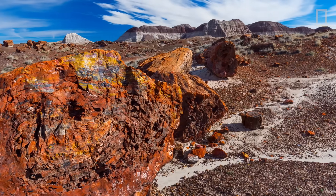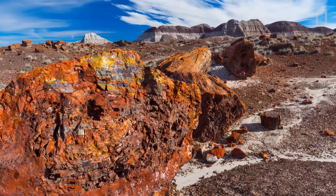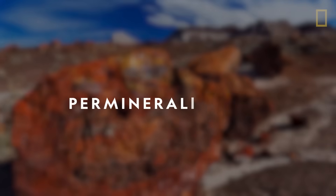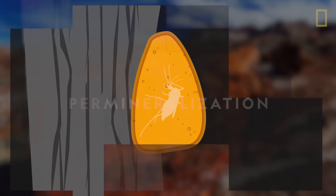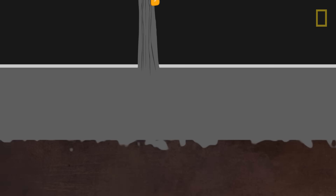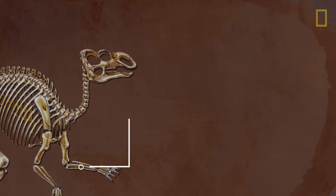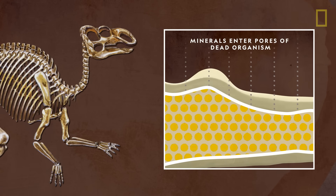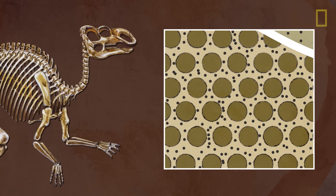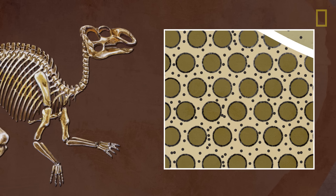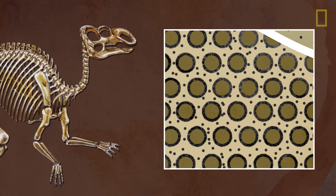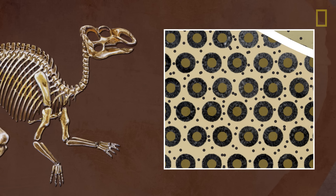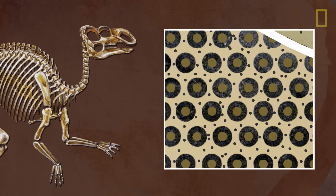But one of the most common types of fossilization that changes a specimen is called permineralization. Permineralization begins when minerals from water or the ground enter the pores of dead plant or animal material. Over time, the minerals attach themselves, clinging onto cellular walls and building a crystalline network in the empty cavities.